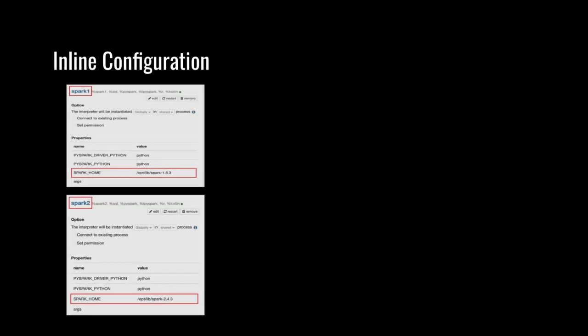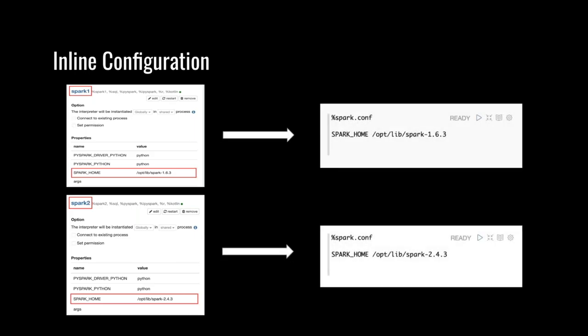The next feature is inline configuration. Zeppelin can be used by multiple users or multiple projects, but different users and projects will need different Spark configurations. Without inline configuration, you would have to create different Spark interpreters — for example, one for Spark 1.6 and one for Spark 2.4. But this is not flexible enough. Inline configuration means you can put the configuration together with the code, making it easy for users to adjust the configuration. You can see how to configure the Spark home using inline configuration on the right side.